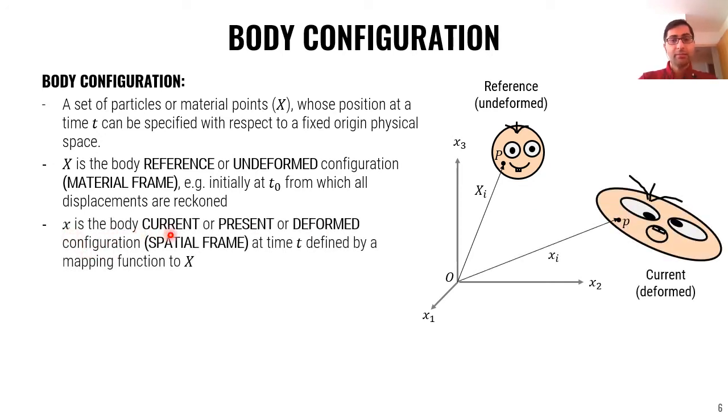x is the body current or present or deformed configuration. We call it a spatial frame. At time t, it's defined by a mapping function to the reference frame capital X. You see our sphere is deformed and moved now and the location, the body configuration in the deformed state is shown by lowercase letters and it's defined based on a mapping to the original location of those points in the undeformed configuration.